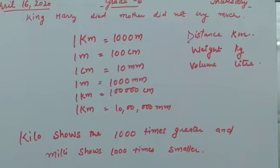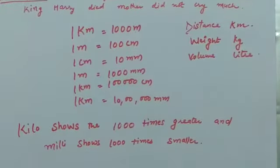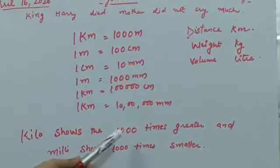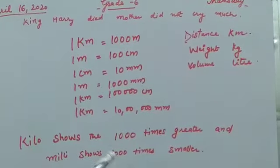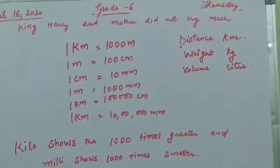And kilo: kilometer, kilogram, kiloliter. Kilo shows one thousand times greater and milli, the last unit, shows one thousand times smaller.